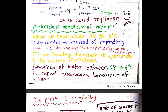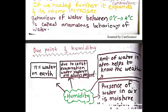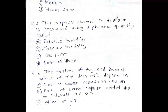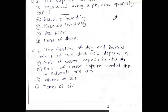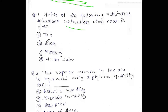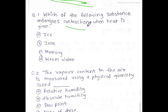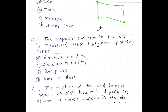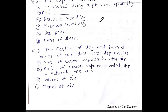When we heat water from 0 degrees to 4 degrees Celsius, it contracts instead of expanding. So if there is contraction, it is ice — water in that temperature range. Option A is correct. The concept is about the anomalous behavior of water.